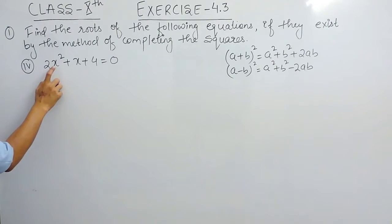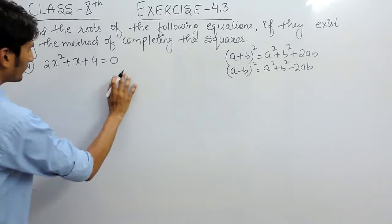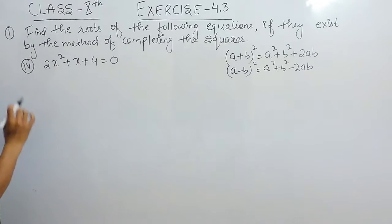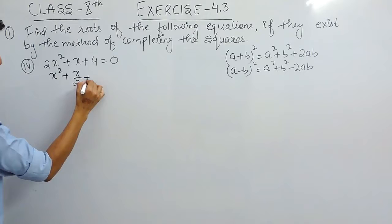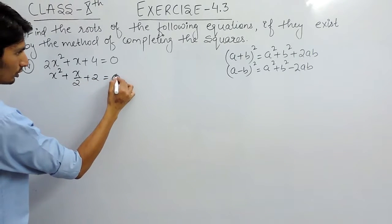Now because here the coefficient of x square is 2 and you have to make the coefficient of x square as 1, so divide this whole equation by 2. So this will be x square plus x by 2 plus 2 equals to 0.